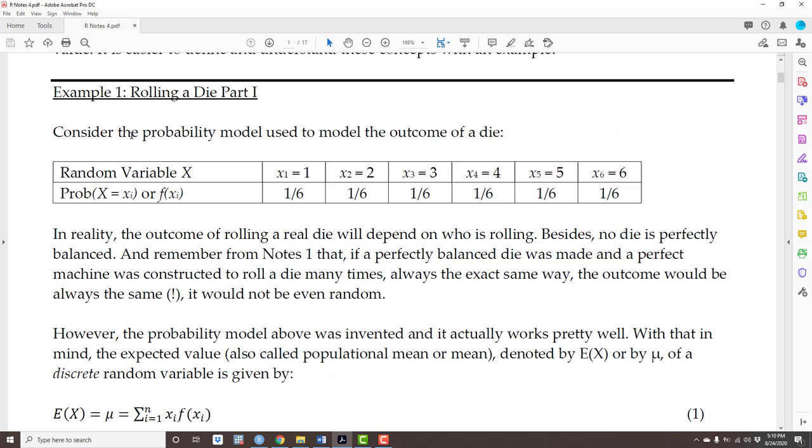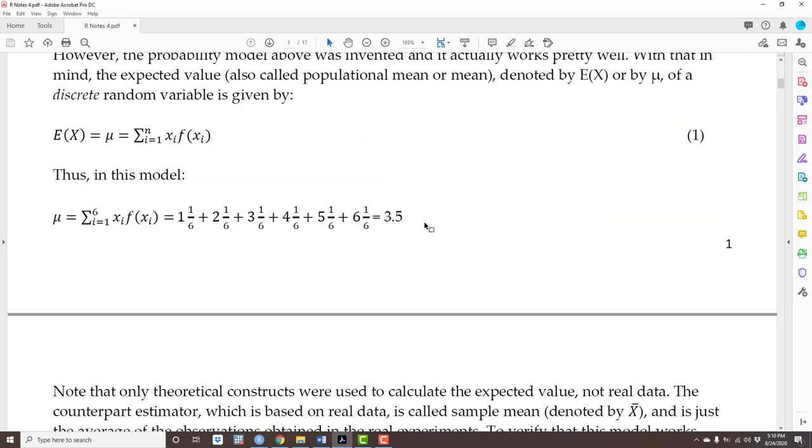For instance, we assume that the outcome of rolling a die follows this model here. The possible outcomes are 1 to 6, and the probabilities are 1 over 6 each. Indirectly, we also assume that the expected value is 3.5.